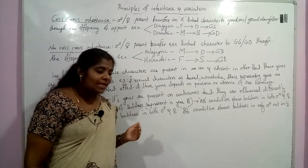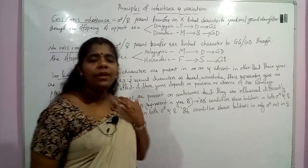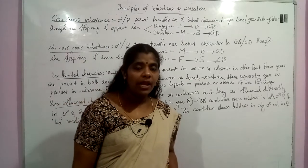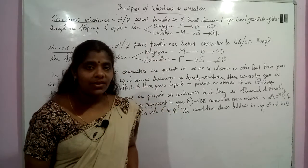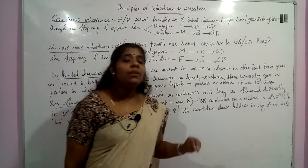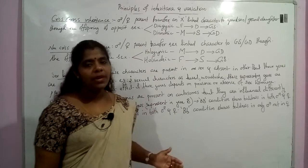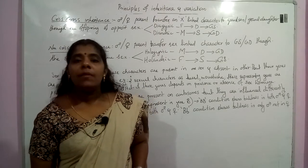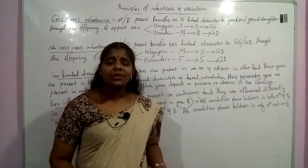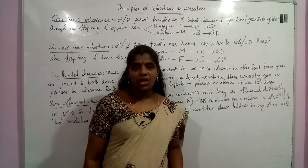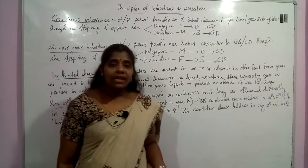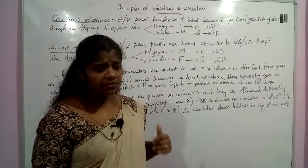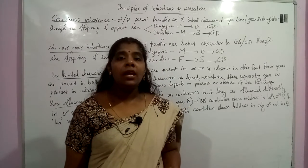Beard and moustache formation — the genes for this character are present on the autosome, so they exist in both male and female. But for the expression of this gene, the support of male or female hormones is needed. For beard and moustache, testosterone is required to express the gene. Similarly, breast development occurs in females due to a gene present on the autosome, but female hormones are required to express it. In males, there is no female hormone, so there is no breast development.